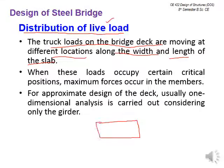The truck loads on the bridge deck move at different locations along the width and length of the slab. The truck load has two axles, and each axle is comprised of two wheels — a complete set of four wheels placing live load on the bridge deck. It is not sufficient to consider vehicular loads in only one direction; they must be distributed along both the length and the lateral direction.